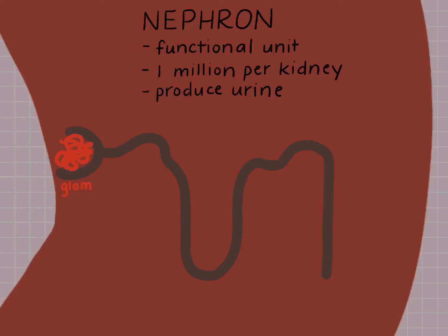This is what the nephron looks like. We'll start on the very left with the glomerulus, which is this network of vessels that serves as a filter. This is the section of the nephron that blood initially enters, and that filter is going to filter out the major toxins from the blood.